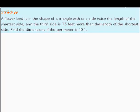A flower bed is in the shape of a triangle with one side twice the length of the shortest side and the third side is 15 feet more than the length of the shortest side. Find the dimension if the perimeter is 131.